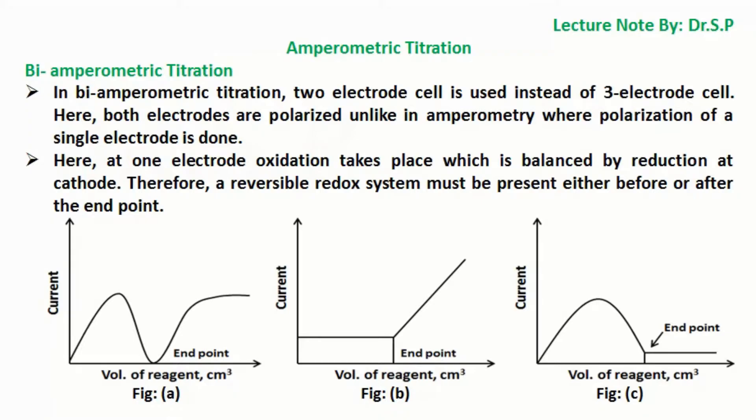Bi-amperometric titration: In bi-amperometric titration, 2 electrode cell is used instead of 3 electrode cell. Here, both electrodes are polarized unlike in amperometry where polarization of a single electrode is done. Here, at one electrode oxidation takes place which is balanced by reduction at cathode. Therefore, a reversible redox system must be present either before or after the end point.